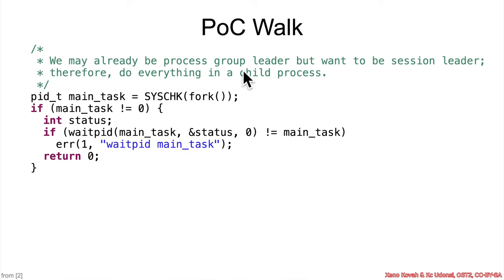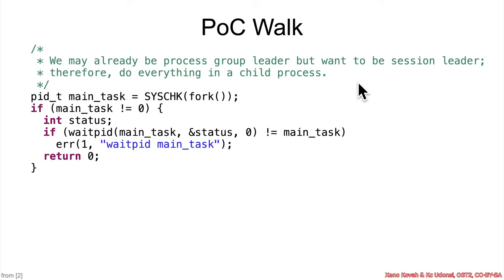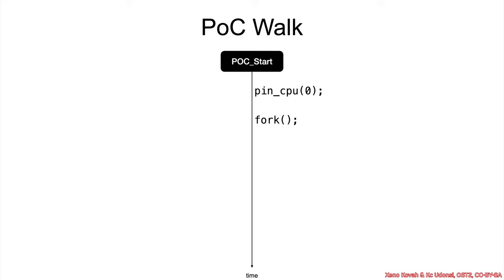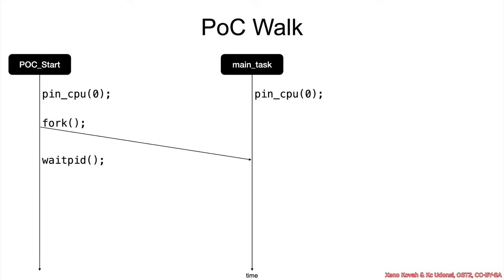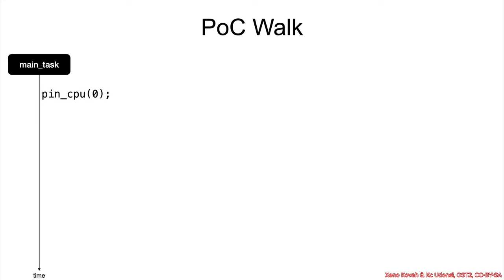The code says: we may already be the process group leader, but we want to be the session leader — therefore do everything in a child process. Sessions are essentially things above process groups, and this was found necessary for reliability. So this initial process is going to fork and start a new process — the main task. The first process just waits forever and we stop caring about it, focusing on the main task from here on.